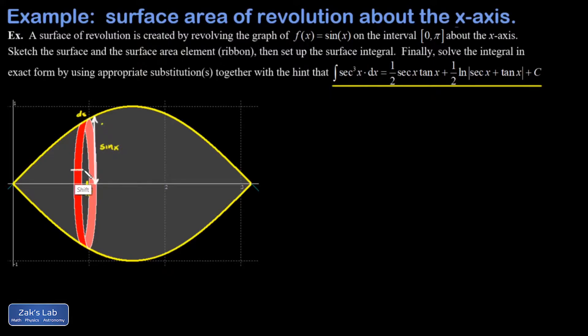Next, we cut and unroll this ribbon, and that looks something like this. There's my width, ds. Then the length of this very skinny rectangle is going to correspond to the circumference of the ribbon when it was rolled up. So that's 2 pi times the radius, or 2 pi sine x. Then we'll refer to this small increment of area as an area contribution, dA.